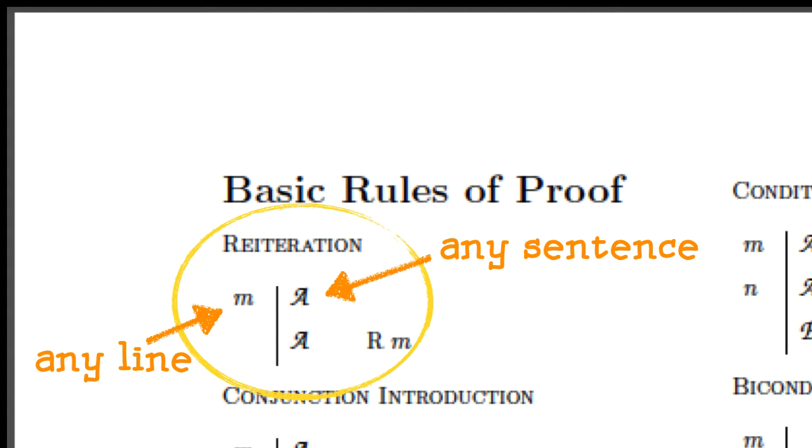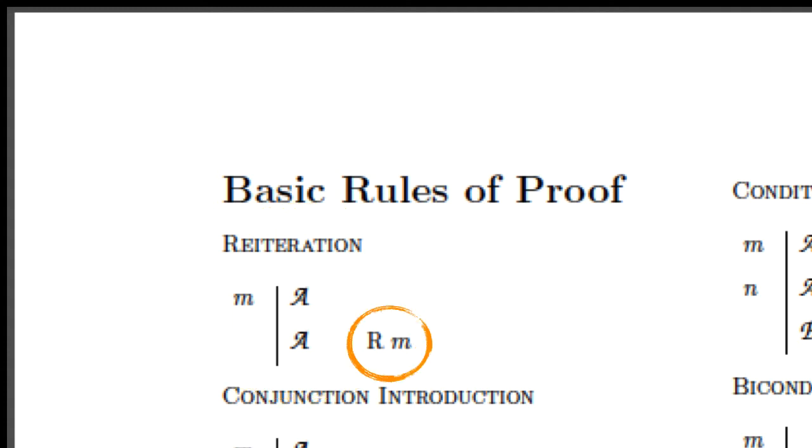The schematic rule has a script letter A because it can be any sentence. It can be a sentence letter or it can be a long compound sentence with lots of connectives. What you write as the rule is the abbreviation for reiteration: that's just R followed by the number of the line that you're repeating.